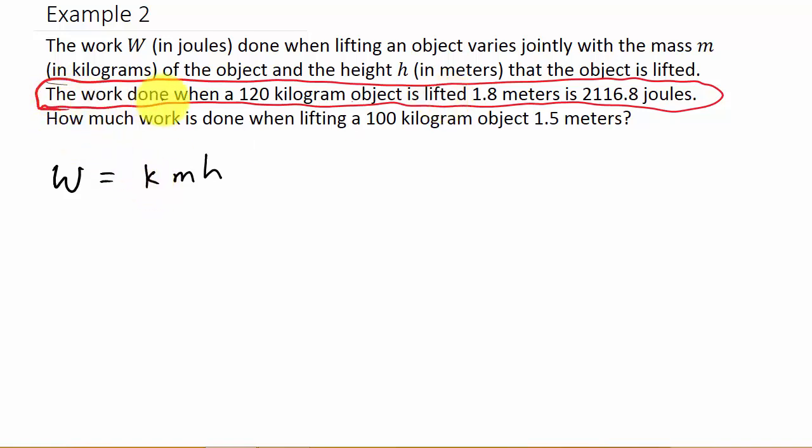Okay, so the work done when a 120 kilogram object, so the 120 is the mass m in kilograms, is lifted 1.8 meters, so that tells us the height h, is 2,116.8 joules. This is the work, w.